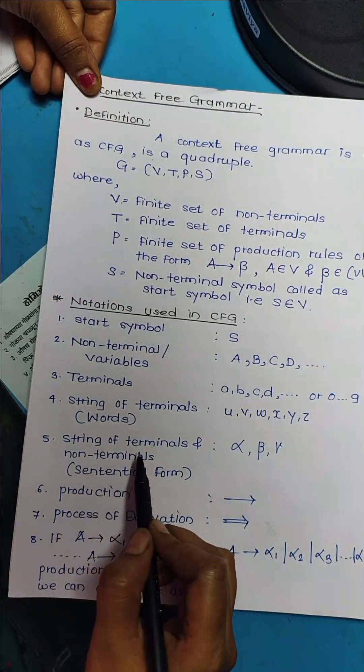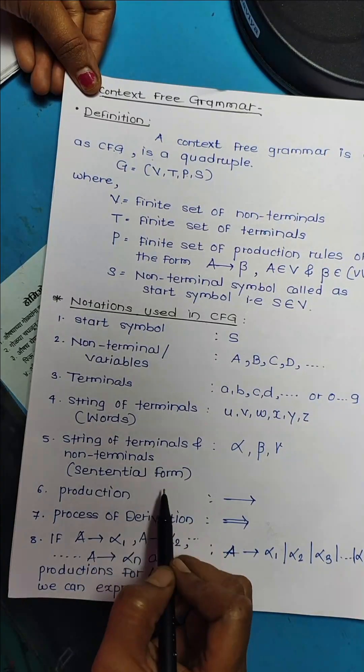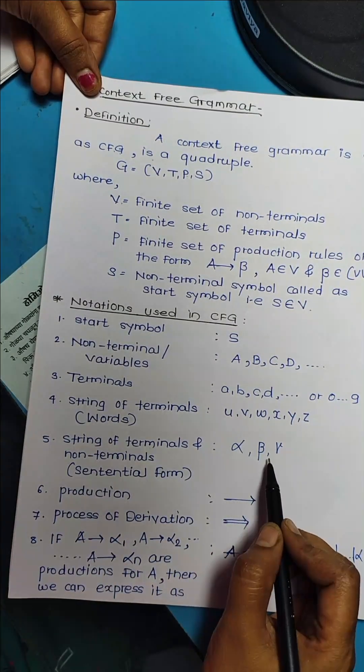Then, strings of non-terminals as well as terminals, which are also called sentential forms, are denoted using alpha, beta, and gamma.